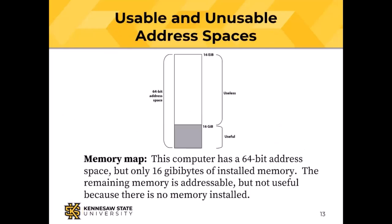Here is a memory map of my laptop. It has a 64-bit address space — 16 exibibytes — but it's only got 16 gibibytes of installed memory. I've got a 64-bit address space, but I've only got 16 gibibytes of installed memory. The address space is addressable — I can generate addresses in those 64 bits — but it's not useful because there's no memory installed there. I can only use the memory that's physically there.